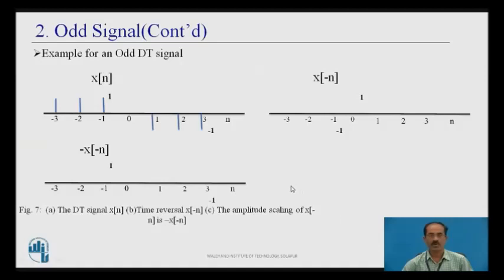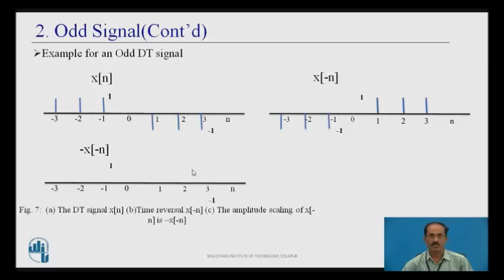Discrete time example for odd signal: here is x(n), and this is -x(-n); these two must be the same. Step by step: x(-n) means whatever signals present at n = -1, -2, -3 should shift to n = 1, 2, 3 respectively. Similarly, signals at n = 1, 2, 3 should shift to n = -1, -2, -3 respectively. This is x(-n), the mirror image of x(n).